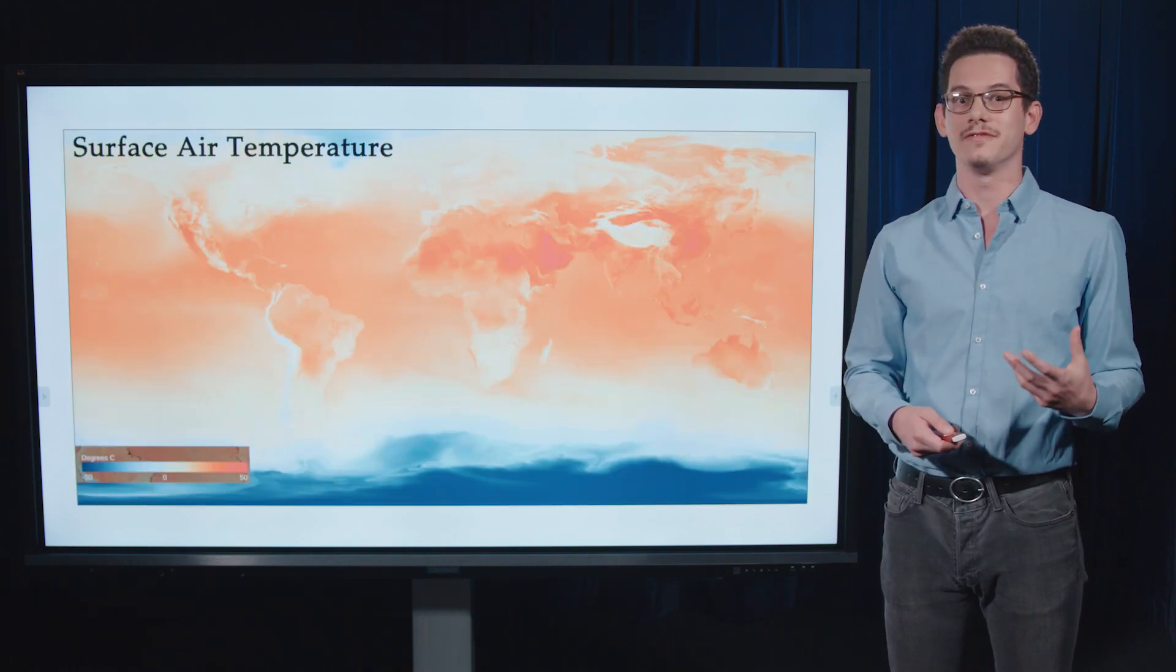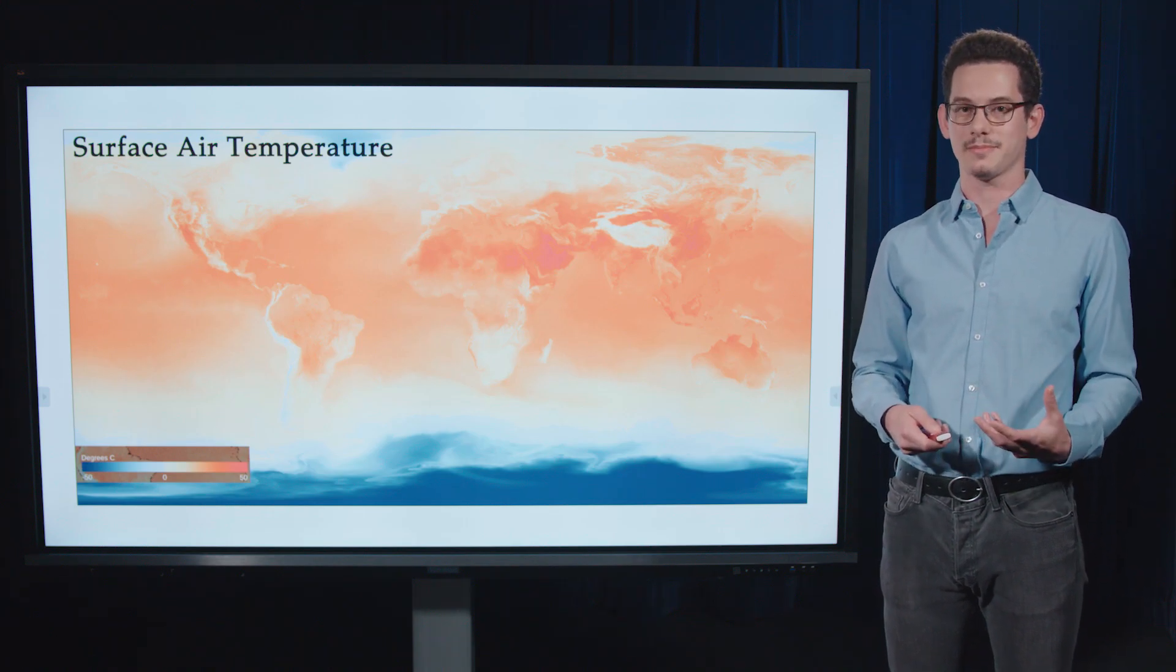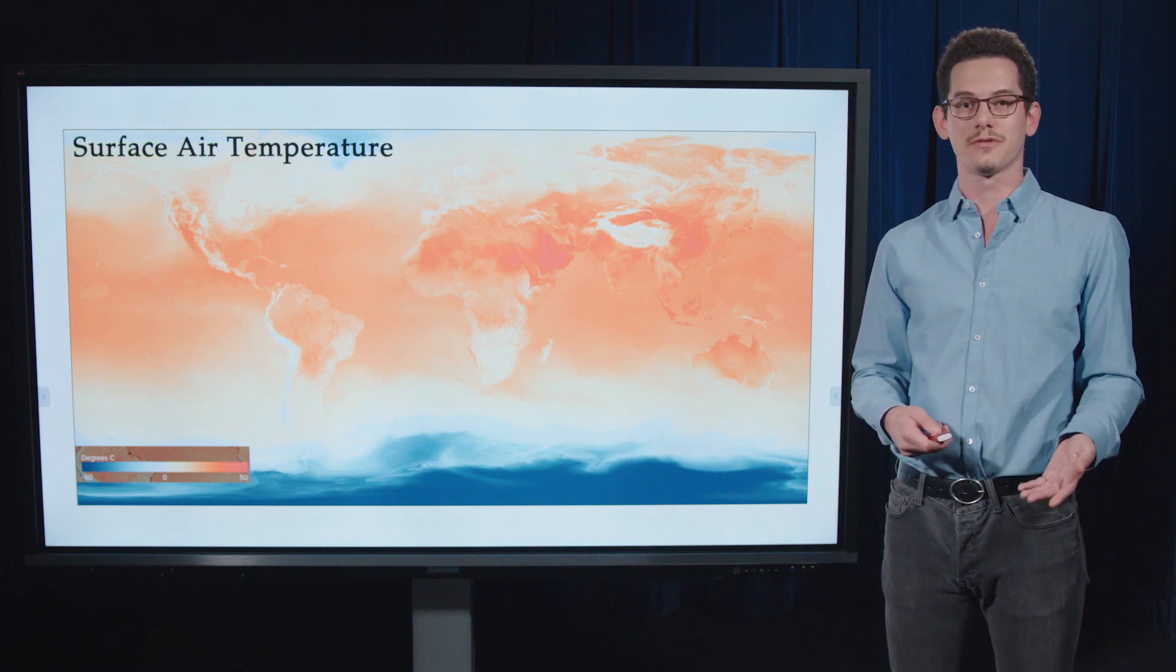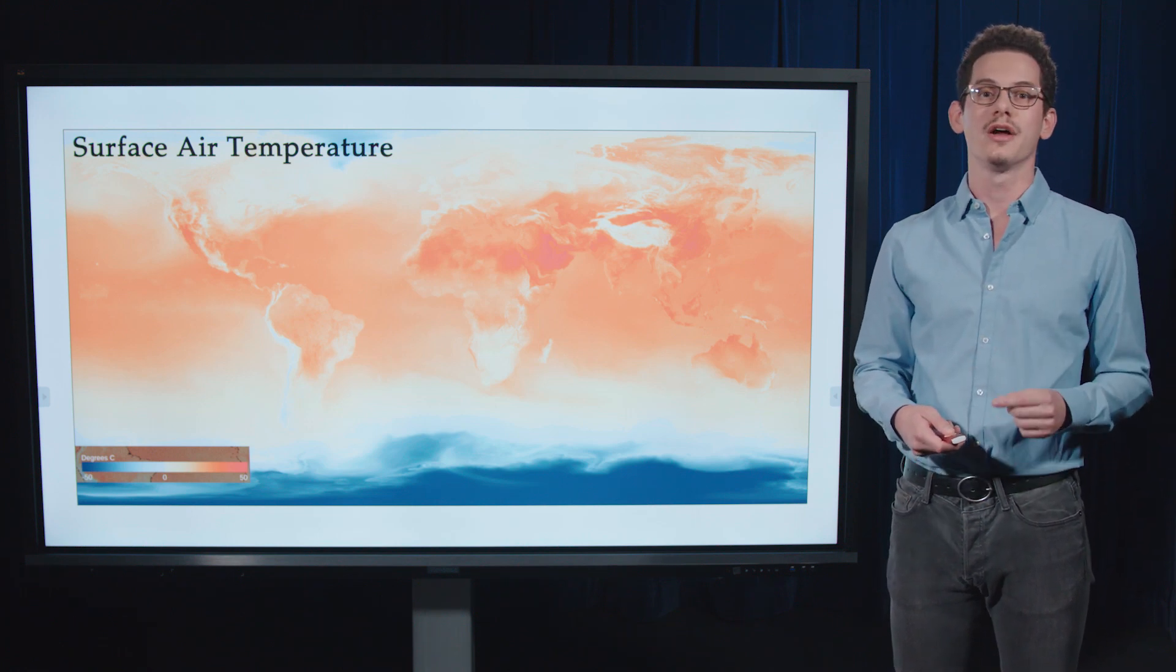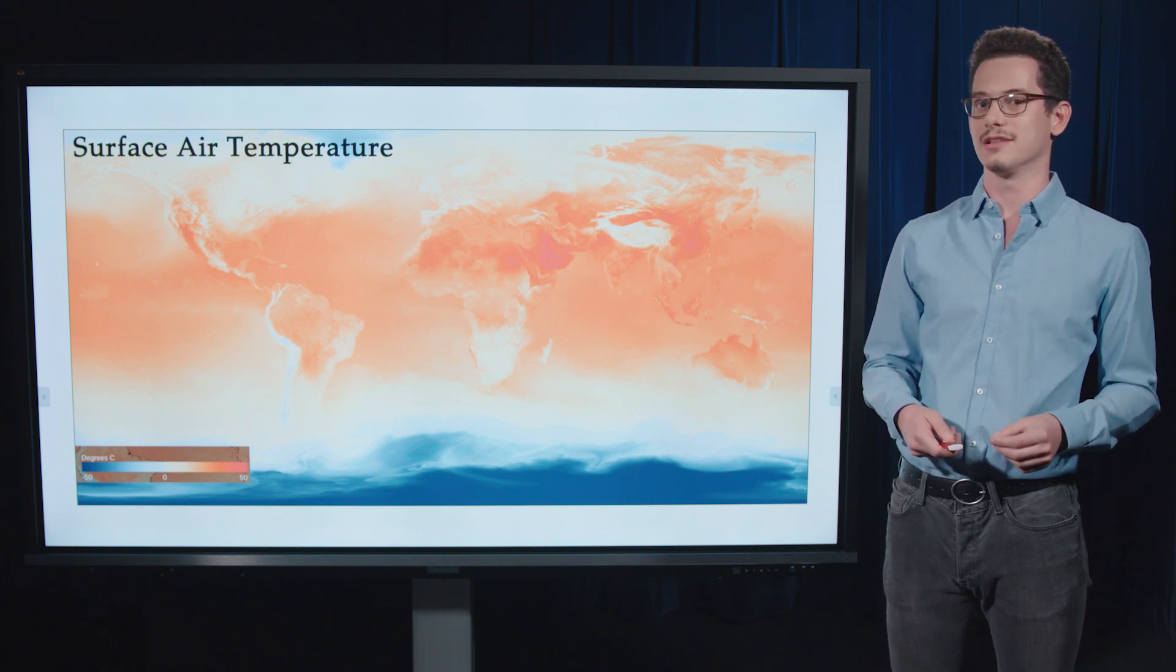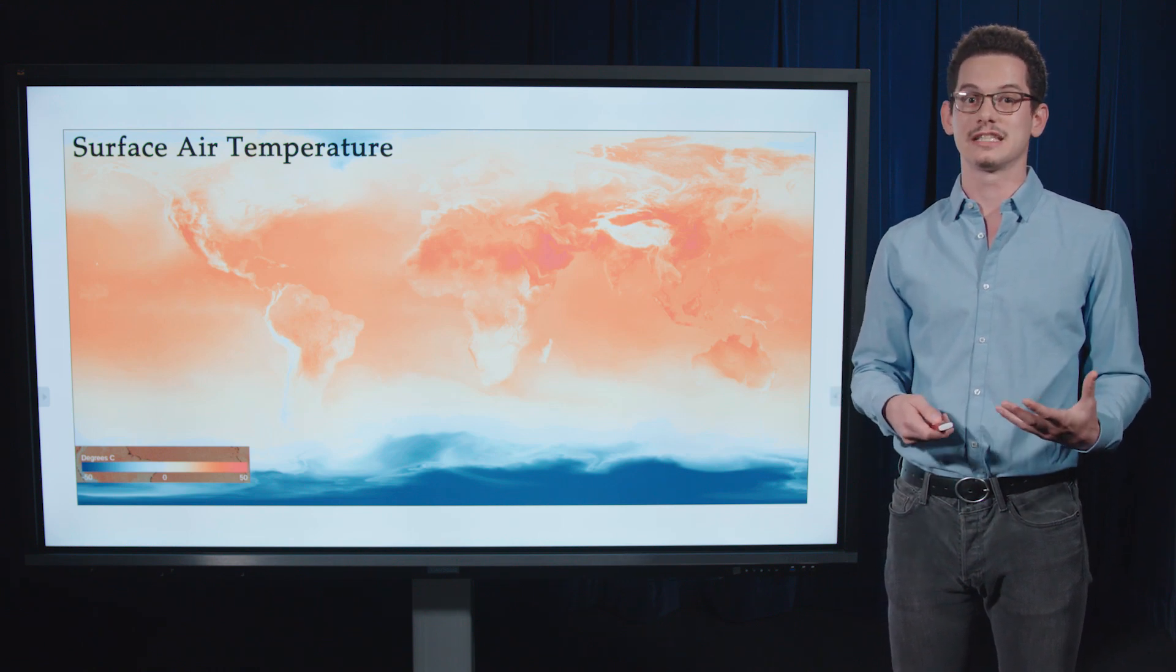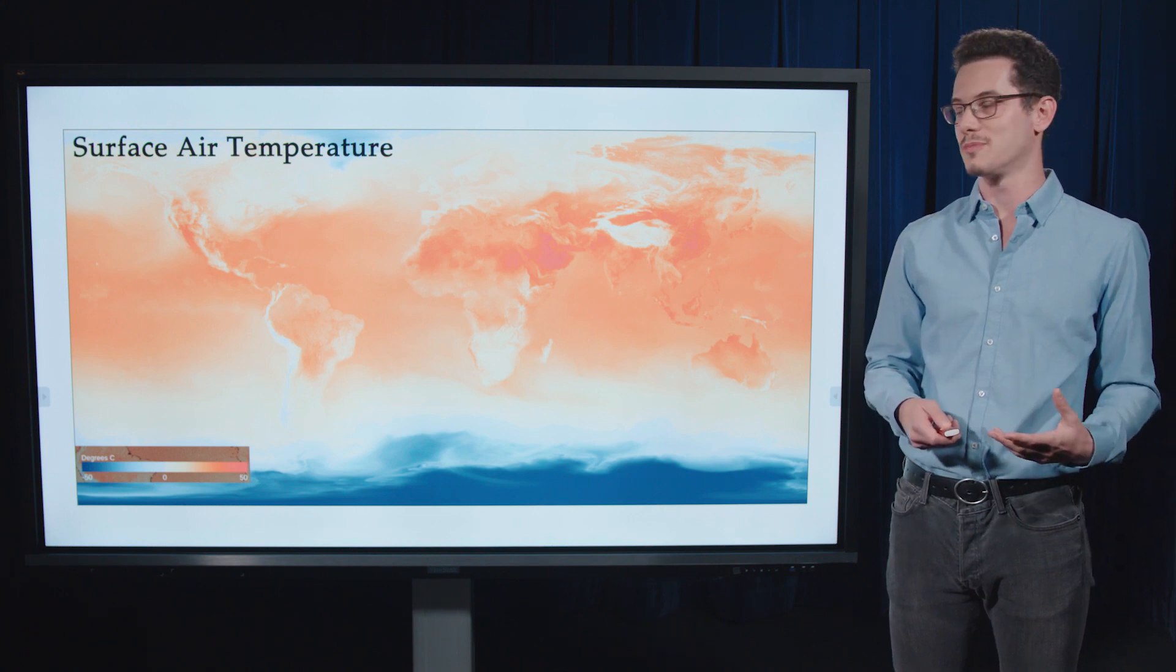Another type of forecast product that NOAA produces are these spatial heat maps. So this is the forecasted air temperature one week from today, forecasted by the global forecast system. And the color at every location represents the forecasted temperature at that location. So we can see the spatial variability in what the air temperature is expected to be next week. But we see that there's no uncertainty represented here.